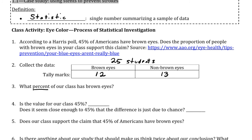To find what percent of students have brown eyes, we are simply going to take the number of students that have brown eyes, which is 12, and divide that by the number of total students in the class — 12 out of 25. If you divide those two, you get 0.48, which, when converted to a percentage, is 48%. Meaning that our class, our sample here, has 48% of students with brown eyes.